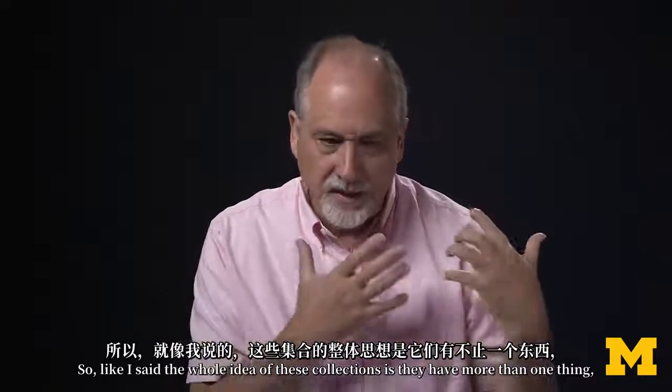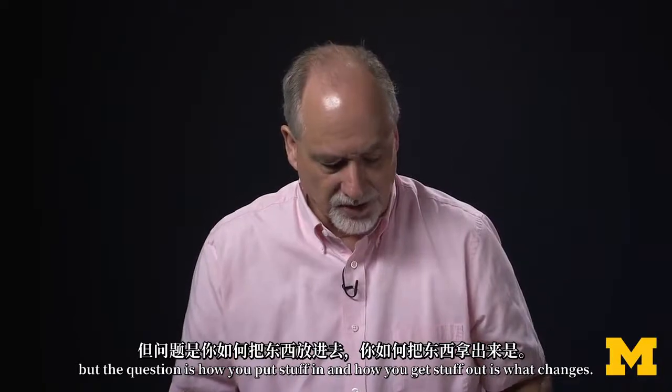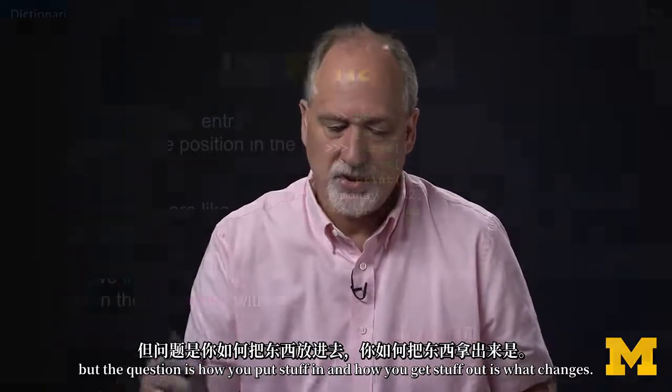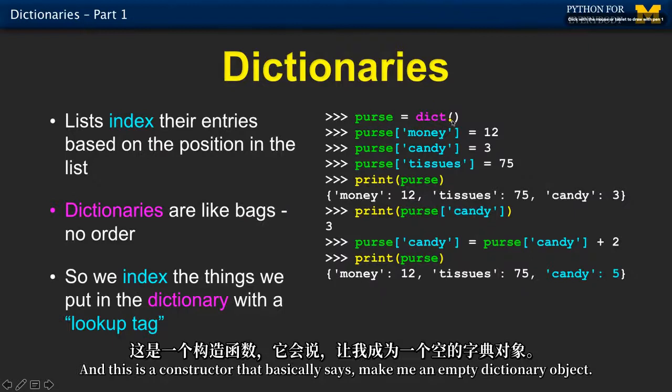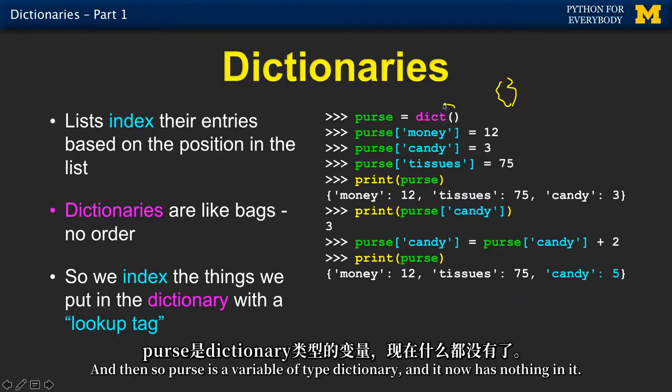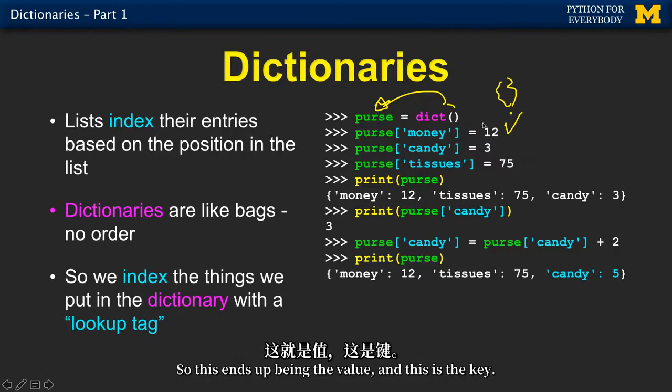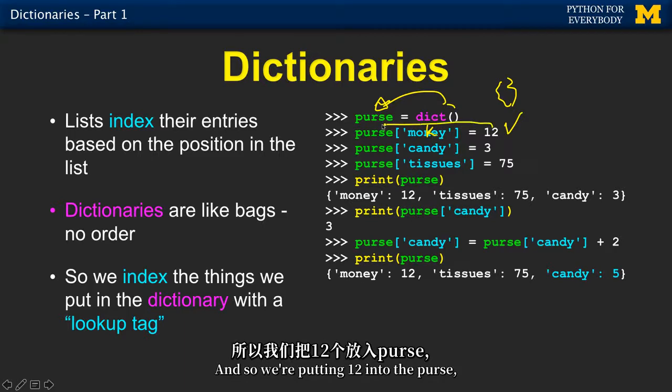So, like I said, the whole idea of these collections is they have more than one thing, but the question is how you put stuff in and how you get stuff out is what changes. So here we're going to make a dictionary. And this is a constructor that basically says, make me an empty dictionary object. If we're doing this with a constant, we just use curly braces. Curly braces are for dictionaries. So purse is a variable of type dictionary, and it now has nothing in it. Whereas in the list we had to append stuff, we use the index operator on the left-hand side of an assignment statement to indicate the key. So this ends up being the value, and this is the key, the key value pair. And so we're putting 12 into the purse, but on the way in we're labeling it with money.